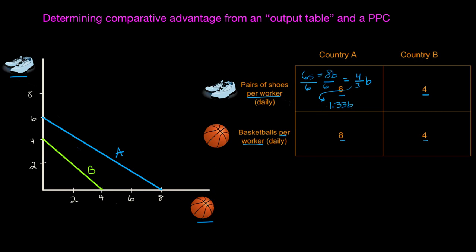Now let's calculate the opportunity cost of basketballs in terms of shoes. Country A can produce either eight basketballs or six shoes. To find the cost of basketballs, I divide both sides by eight, and I get an opportunity cost of three-fourths of a pair of shoes per basketball. Converting this to a decimal, three-fourths comes out to 0.75 pairs of shoes per basketball.